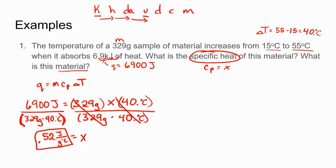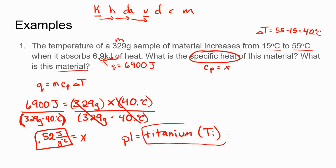To figure out the material, we look at page one of the reference tables and find the specific heat closest to 0.52. Our reference table uses three significant figures but we can still match it up — the closest value is titanium, symbol Ti. So the material must be titanium.